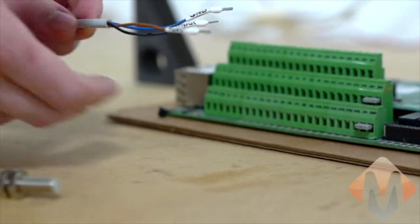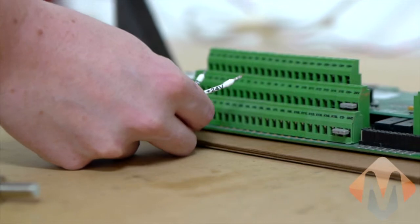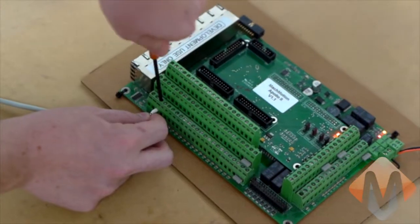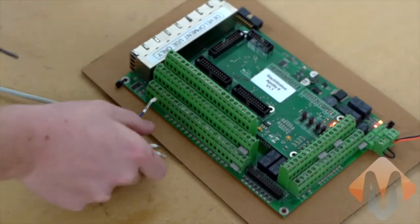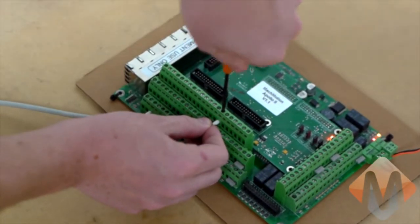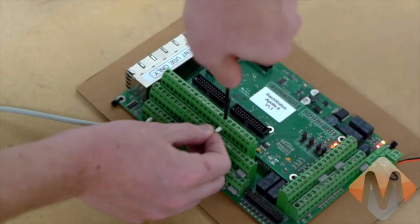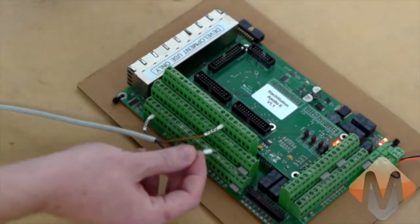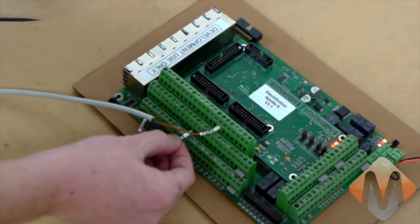To wire it in, there's going to be a ground, so we'll wire that to the ground terminal. You have a 24-volt input that we'll put into the C0 Plus bus. And then you have your signal, which we're going to wire into X5.